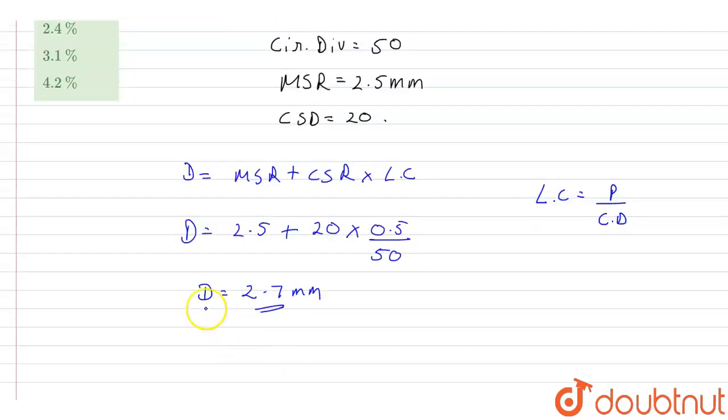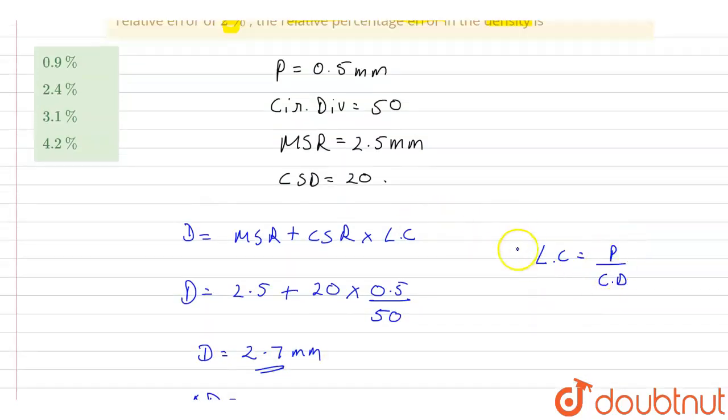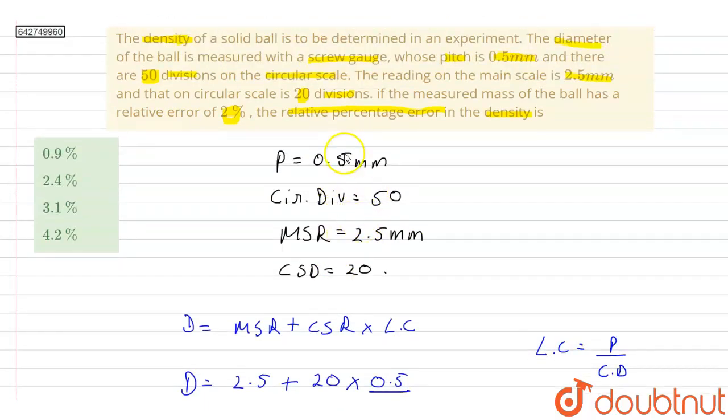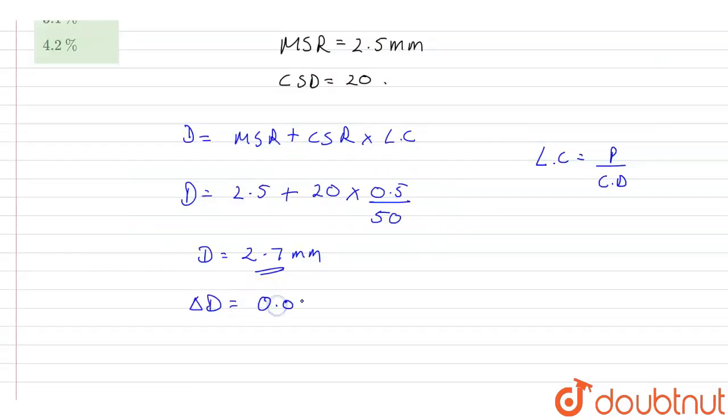So this is the diameter, and in this case the uncertainty in the diameter delta D will be equal to least count, and that is equal to pitch upon circular divisions. So pitch is 0.5 mm and circular division is 50, so 0.5 upon 50 will be equal to 0.01 millimeter.